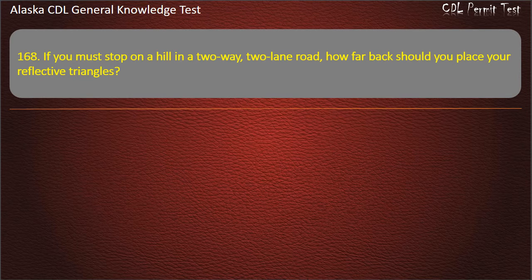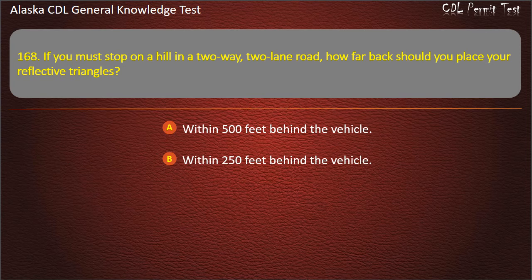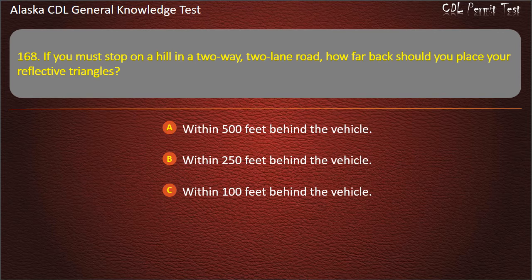Question 168. If you must stop on a hill in a two-way, two-lane road, how far back should you place your reflective triangles? Within 500 feet, within 250 feet, or within 100 feet behind the vehicle. Answer: Within 500 feet behind the vehicle.